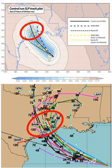Hurricane track forecasts have been getting better in recent years. Looking at the example of Hurricane Rita, the forecast of the National Hurricane Center 36 hours before landfall shifted more than 130 km from the previous forecast, causing an unneeded evacuation.